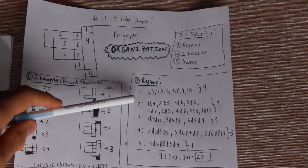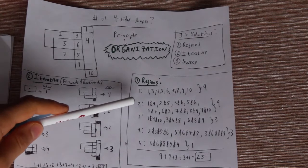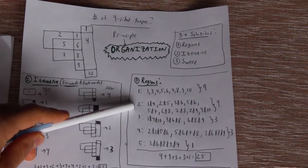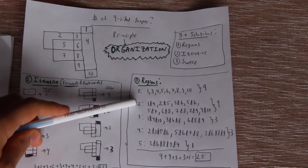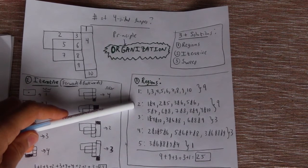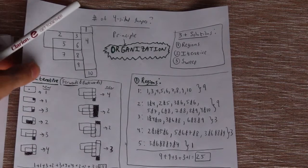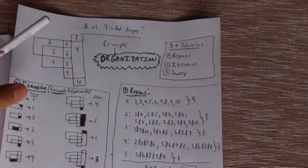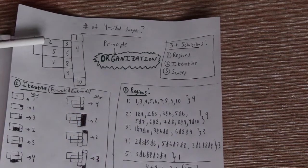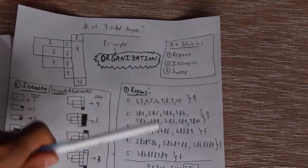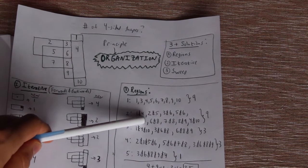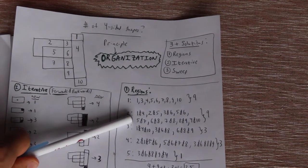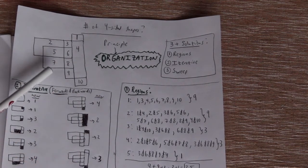Now we go to four-sided shapes that have two regions inside them. I'm trying to go in order of the numbers to avoid losing track. Two regions would be: one and four, two and five, three and six, five and six, five and seven, six and eight, seven and eight, eight and nine, and four and ten. Those are all the two-region shapes — nine of them.